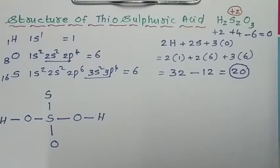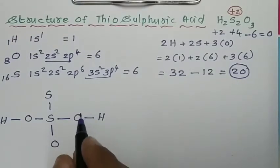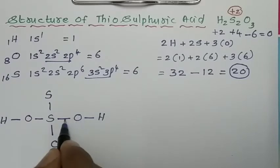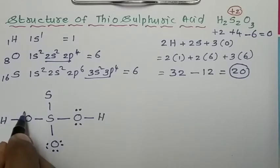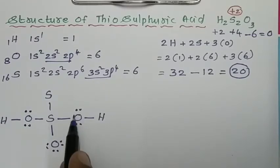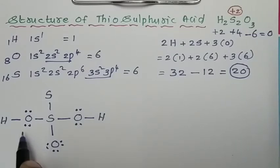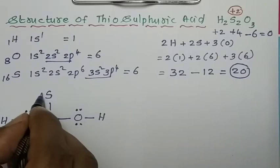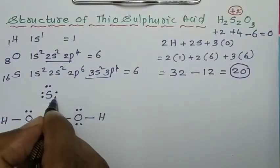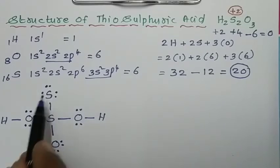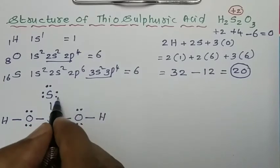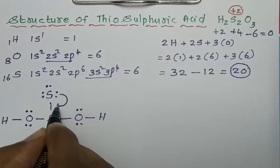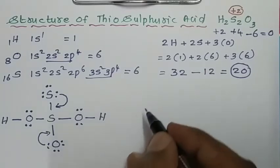Fill the remaining 20 electrons as lone pairs to complete the octet. For each oxygen, it already has 2 electrons from the single bond, so add 4 more to complete the octet — that accounts for 8 electrons per oxygen across three oxygens. After filling all oxygens, 14 electrons are accounted for, and the remaining 6 electrons sit on the sulfur atom. In thiosulfuric acid, the oxygen in sulfuric acid is replaced by sulfur, so convert one lone pair into a bond pair to form the S=S double bond, giving the final structure.